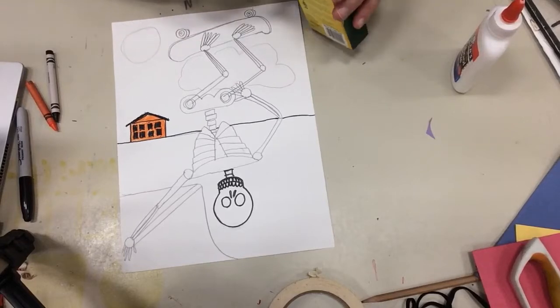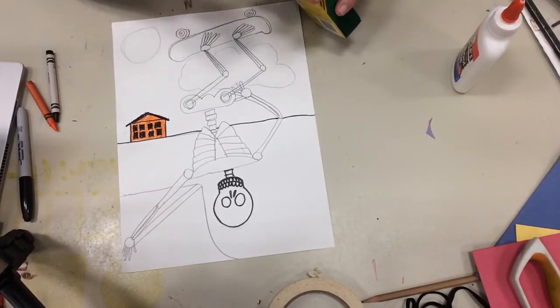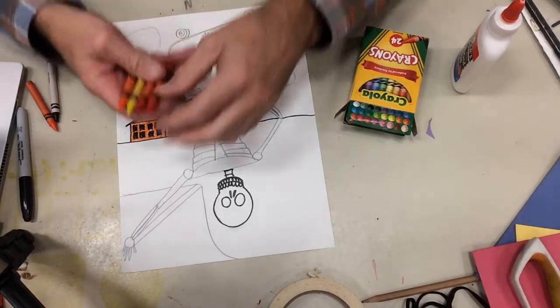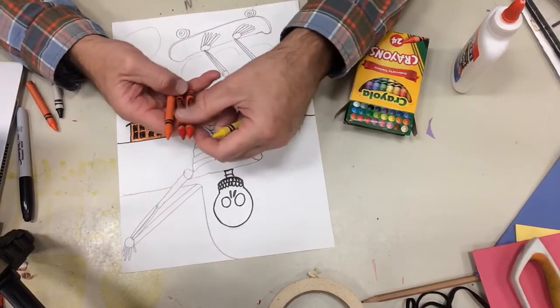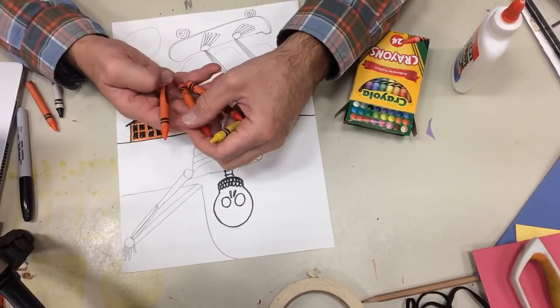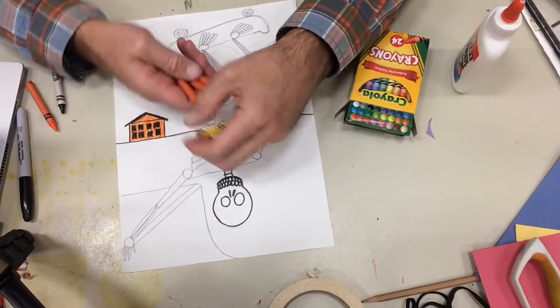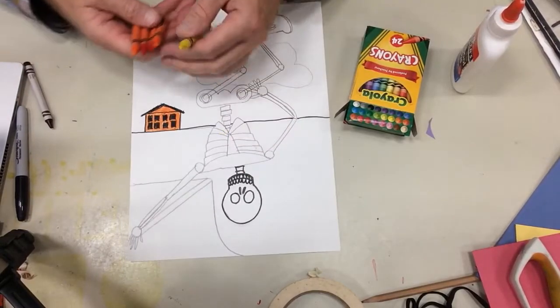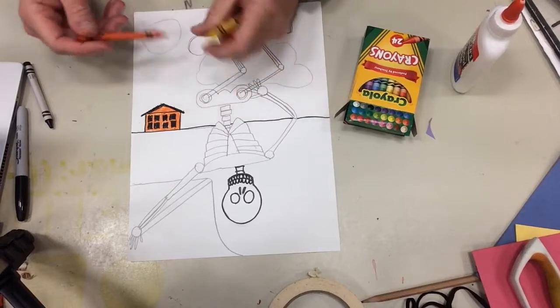Another thing you might want to try is mixing colors when you color. So, watch what I do here. I'm taking all of my different oranges out. Look at how many oranges I have. Look it. Well, that's not orange, but red orange, scarlet, yellow orange, and then regular orange. And then I could use red as well.